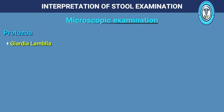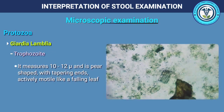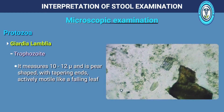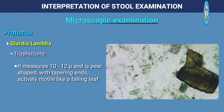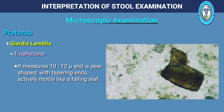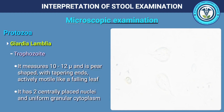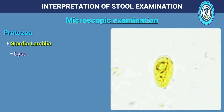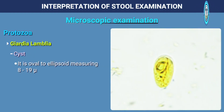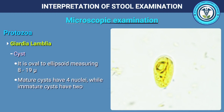Giardia lamblia trophozoite measures 10 to 12 microns. It is pear-shaped with tapering ends, actively motile like a falling leaf, and has 2 centrally placed nuclei and uniform granular cytoplasm. The cyst of Giardia lamblia is oval to ellipsoid in shape, measuring 8 to 19 microns. Mature cysts have 4 nuclei while immature cysts have 2.